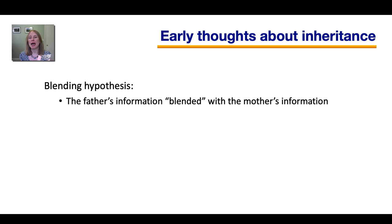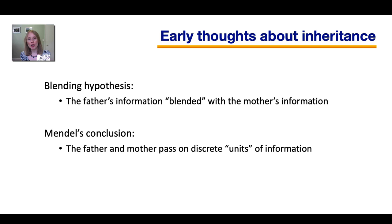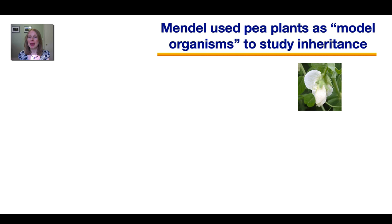So before Mendel, people had what's known as the blending hypothesis. They thought that the father's information blended with the mother's information. And that seems reasonable because we do observe that children look kind of like a blend of their father and their mother, but that wouldn't explain certain things, such as traits skipping generations. Mendel concluded that the father and mother pass on discrete units of information. And we now call these units genes.